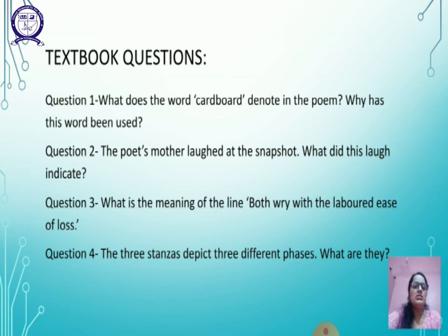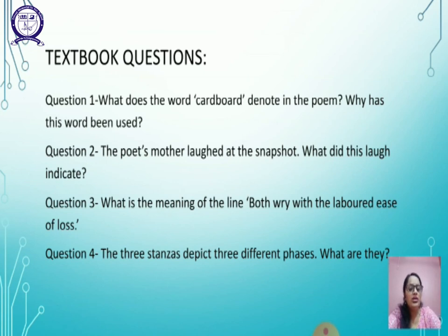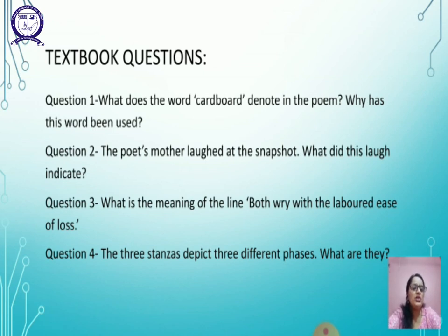The three stanzas depict three different phases of life. The first is childhood, the second is youth, and the third is old age accompanied with death, which is the final end of life. The childhood days are wrapped with innocence. The youth is marked with gaiety and laughter, which is the essence of youthful energy. And then comes the loneliness created by death. So these are the three phases — childhood, youth, and old age — depicted in the poem.